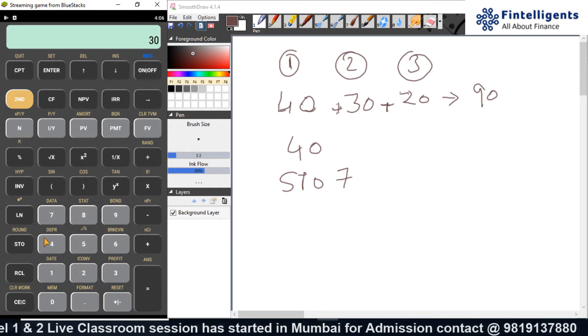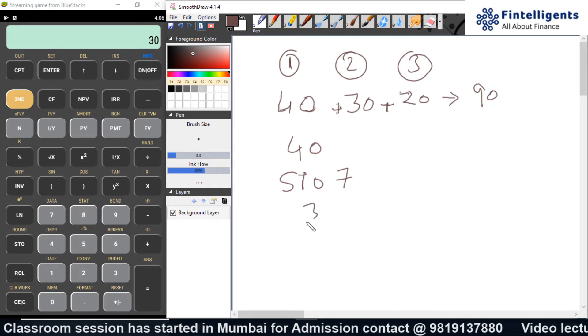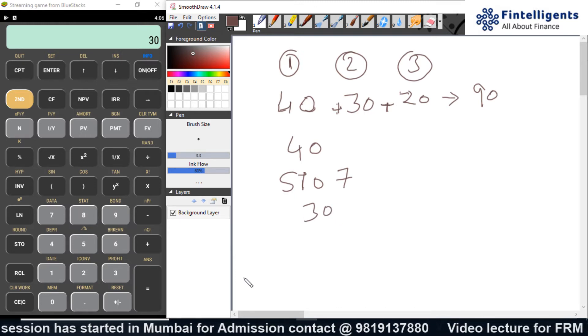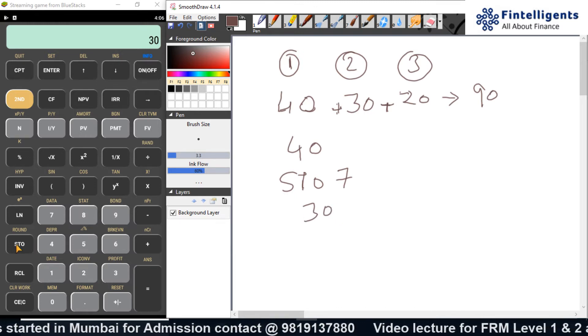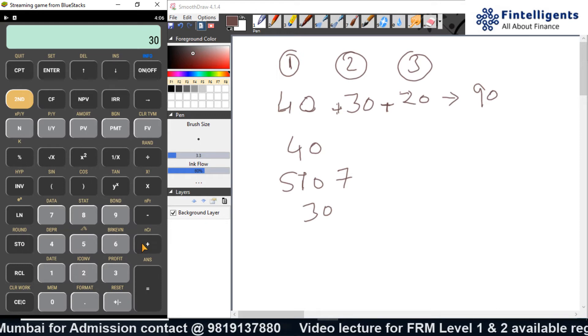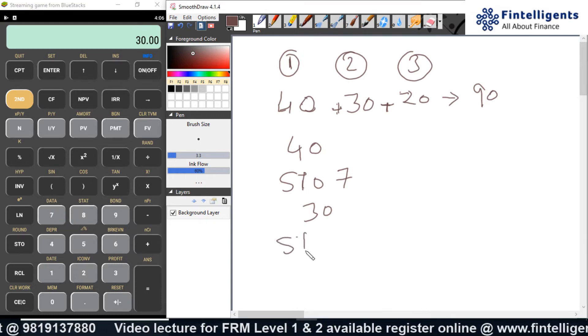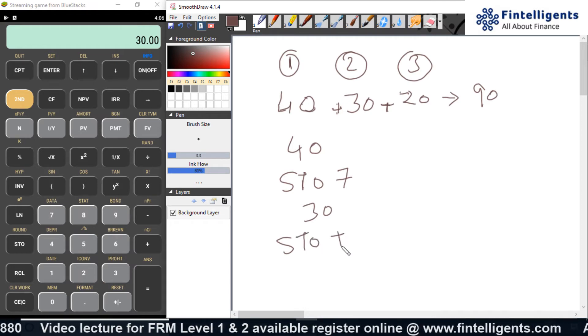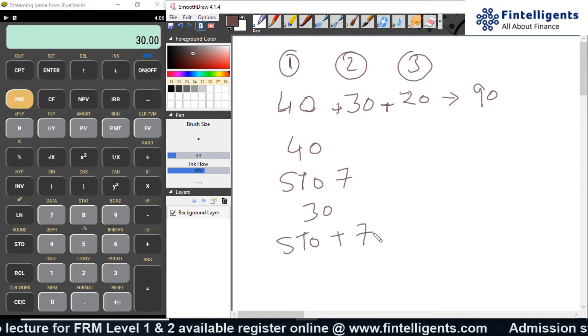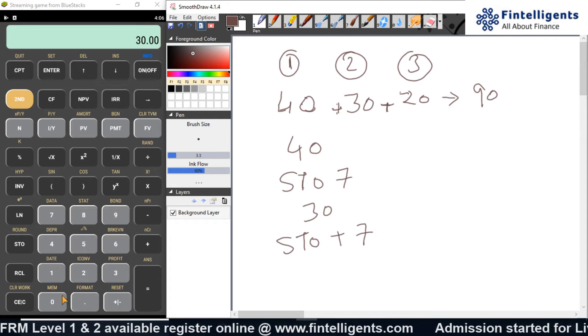I have 30 on my screen. I will go and do STO plus 7. What I did STO plus 7. Why 7? Because the earlier number was stored on 7.